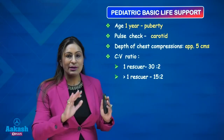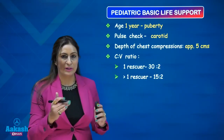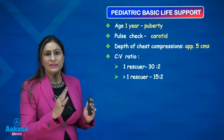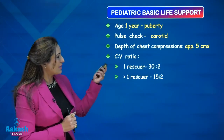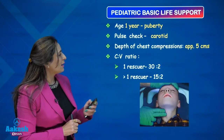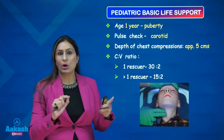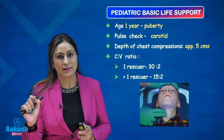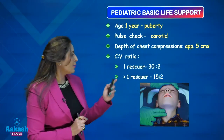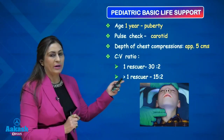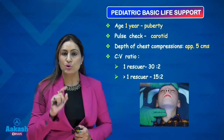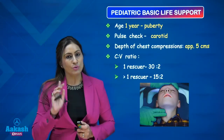In pediatric BLS, all other parameters remain the same. I am just highlighting the differences. For pulse check, we use the carotid pulse check. The depth of compression is approximately 5 centimeters — not 5 to 6 centimeters as in adults. When there is more than one rescuer, the compression-ventilation ratio changes to 15:2.